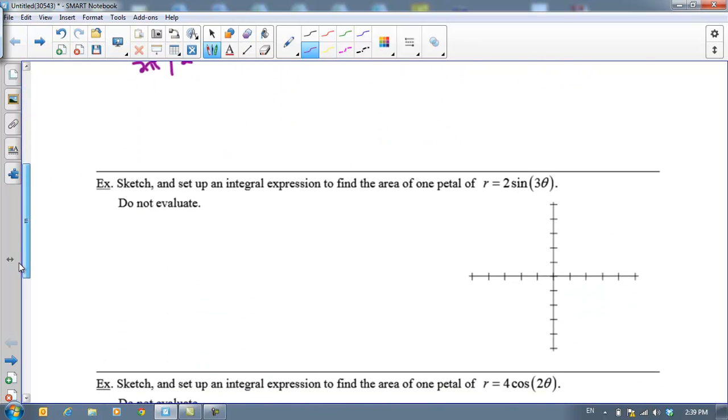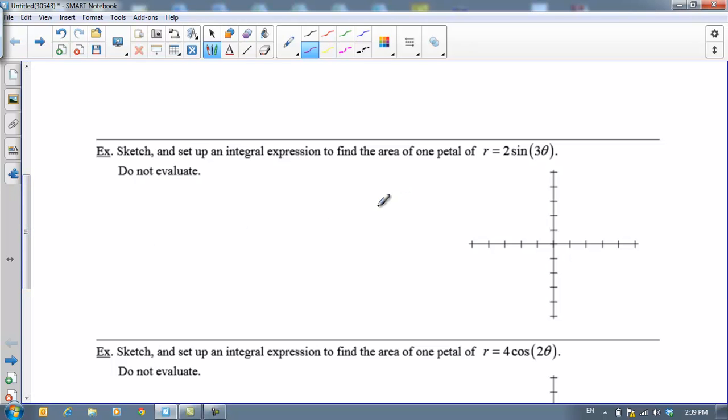Now let's take a look at just setting up an integral expression to find the area of one petal of r = 2sin(3θ). Now you should know that these are polar roses. You should know that this is going to have 3 petals. You should know that the first petal is going to be angled at 30 degrees and also that they are going to be 120 degrees apart.